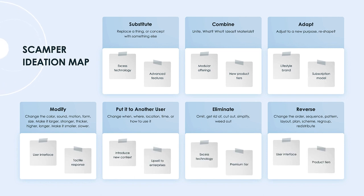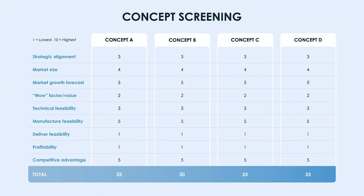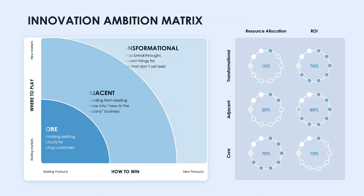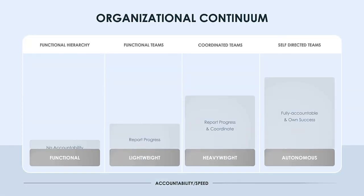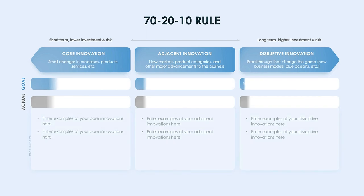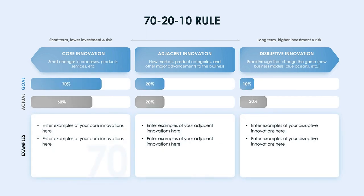So how do you avoid being overtaken, or overtake your competitors with disruptive technology? Let's review some of the top innovative solutions that you can use, like the SCAMPER ideation map, concept screening, innovation ambition matrix, discovery-driven planning, organizational continuum, and many more that are available to download as part of our innovative solutions presentation template.